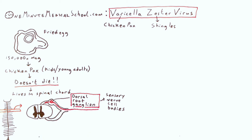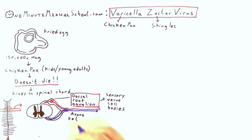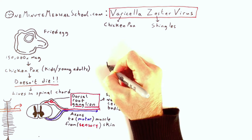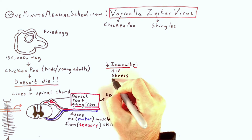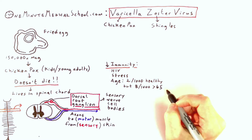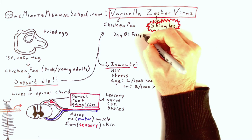The nerves in the front are motor control and they go to the muscles. If you have decreased immunity because of something like HIV, stress, or advanced age, then the virus — which is alive but dormant — can come down the nerve roots and you've got shingles.